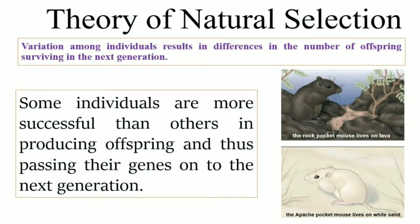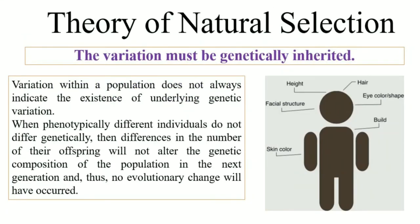On the third condition: if these traits have a genetic basis, they will be passed on to the next generation. For evolutionary change to occur, there must be a change in the allelic frequency of a population. If phenotypically different individuals do not differ genetically, differences in offspring numbers will not alter the gene pool, and there will be no evolutionary change. If a trait does not have a genetic basis, the variation cannot be genetically inherited, and natural selection cannot result in evolutionary change.